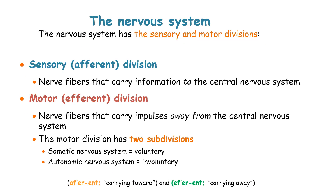The nervous system has a sensory and a motor division. The sensory division is known as the afferent division — afferent meaning carrying toward — and the nerve fibers in the sensory division carry information to the central nervous system from the sensory receptors. The motor division carries impulses away from the central nervous system into the effector organs, and has two subdivisions: the somatic nervous system and the autonomic nervous system.